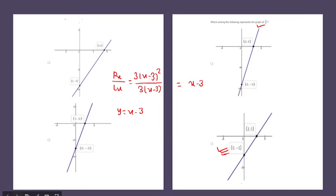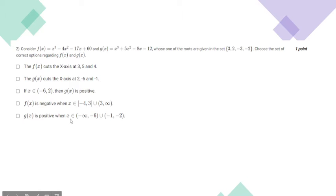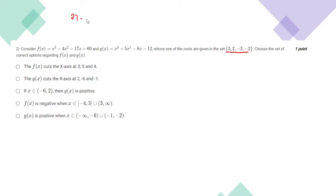Moving to the second question. There are two functions f(x) and g(x), and one of the roots is from a given set. We have to choose the correct options regarding f(x) and g(x) based on five statements. Let us begin by considering f(x) equals x cubed minus 4x squared minus 17x plus 60.